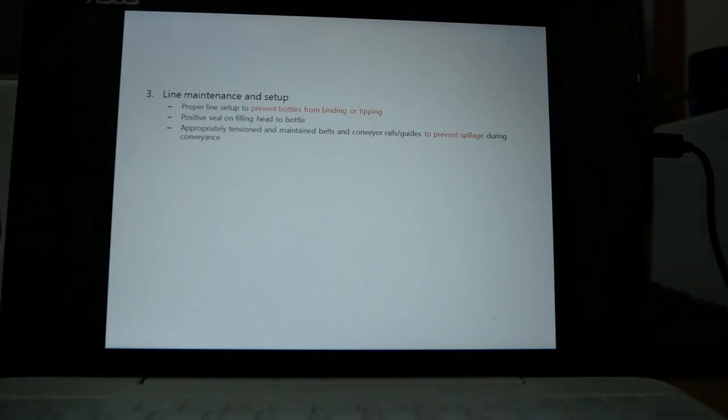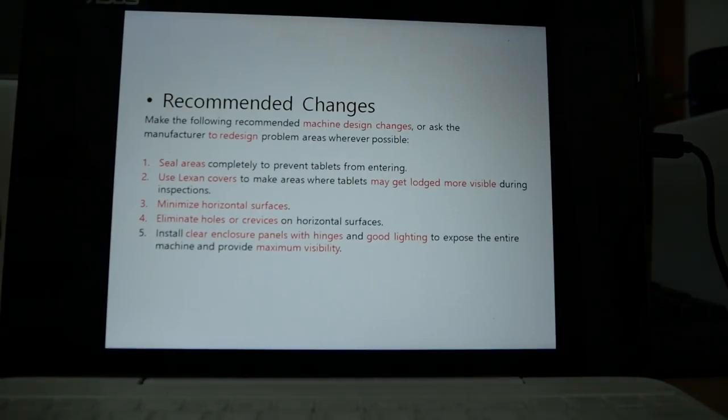Until here, we have checked factors that can affect state of control. From now on, we will see the solutions for the problem. Make the following recommended machine design changes or ask the manufacturer to redesign problem areas wherever possible. Shield areas completely to prevent tablets from entering. Use clear covers to make areas where tablets may get stuck more visible during inspections. Minimize horizontal surfaces. Eliminate holes or crevices on horizontal surfaces. Install clear enclosure panels with hinges and good lighting to expose the entire machine and provide maximum visibility.